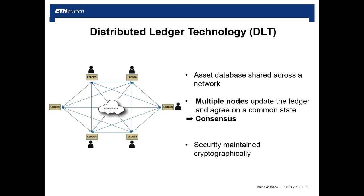These nodes can be deployed by institutions or jurisdictions, and they have the responsibility to update the ledger. In order to validate a transaction, we need a mechanism called consensus — that is when all the nodes in the network agree on a current state of the ledger.